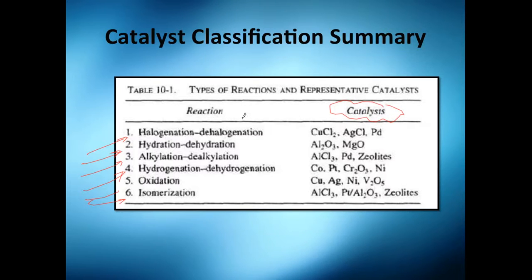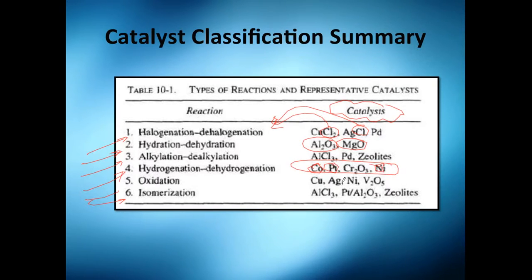For example, halogenation implies the use of halogen-containing catalysts. Hydration and dehydration — alumina and magnesium will be okay. Hydrogenation — a lot of metals like nickel, silver, etc. Oxidation, I cannot tell you a good rule of thumb, you need to learn those by heart. Isomerization — essentially the zeolites are the good ones.